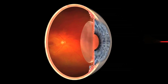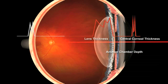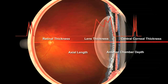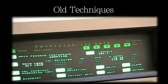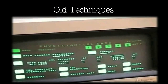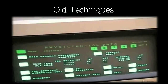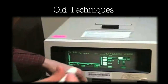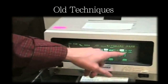LensStar is the first optical biometer to measure lens thickness, providing fast, precise, and non-contact measurements. To obtain this measurement by other means, an A-scan ultrasound examination is necessary. Because this process is exceedingly time-consuming, many physicians do not utilize the advanced formulas.